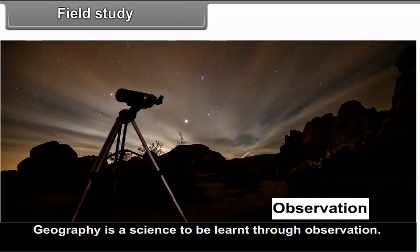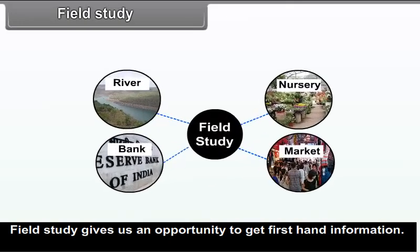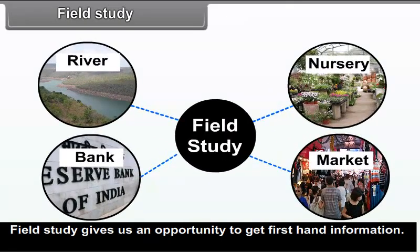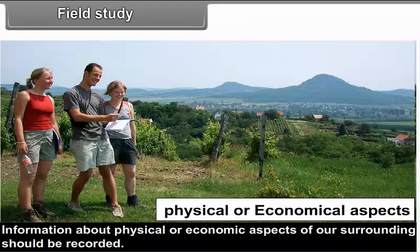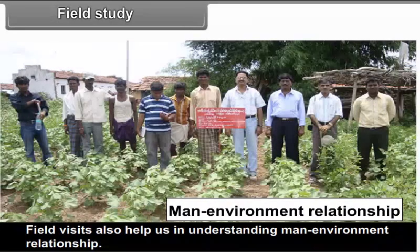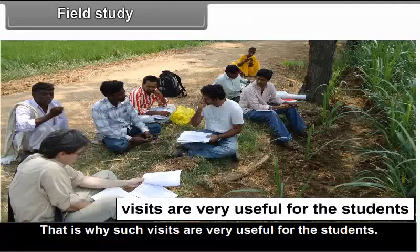9.3 Field Study: Geography is a science to be learnt through observation. Field study gives us an opportunity to get first-hand information. Information about physical or economic aspects of our surroundings should be recorded. Field visits also help us in understanding the man-environment relationship, and that is why such visits are very useful for students.